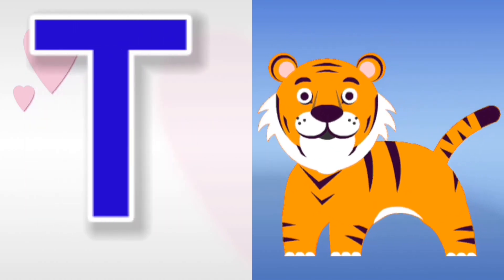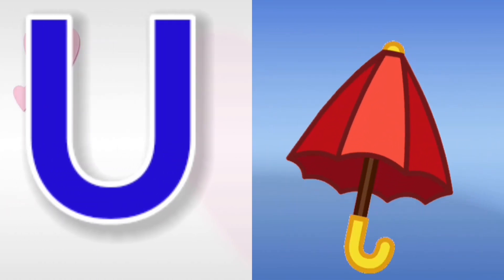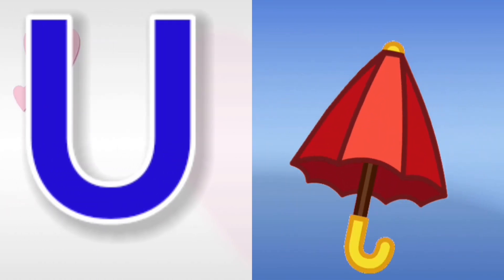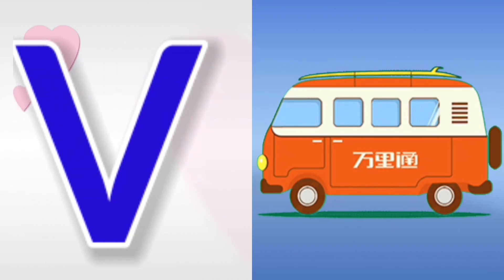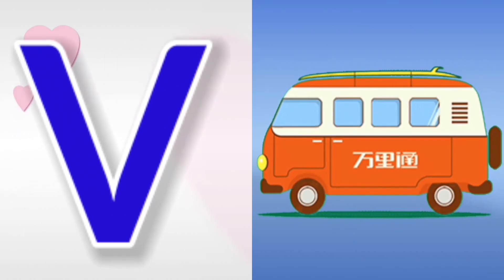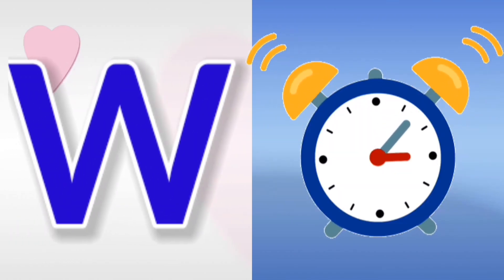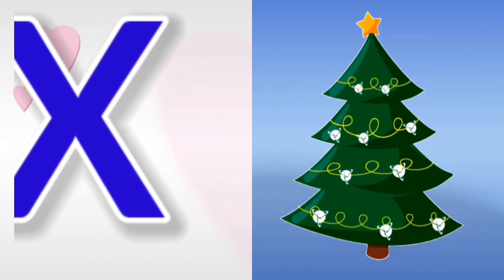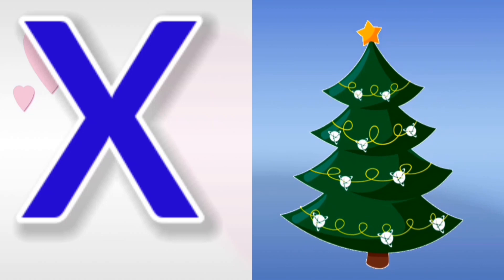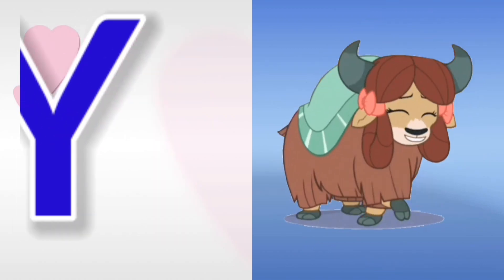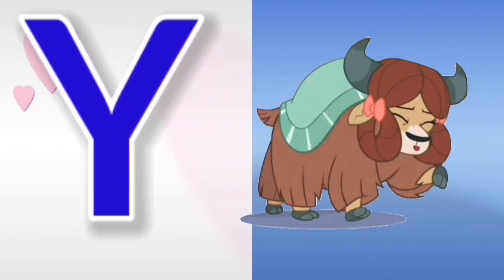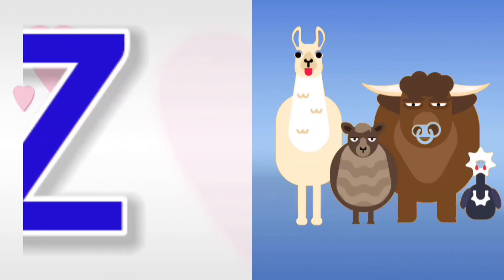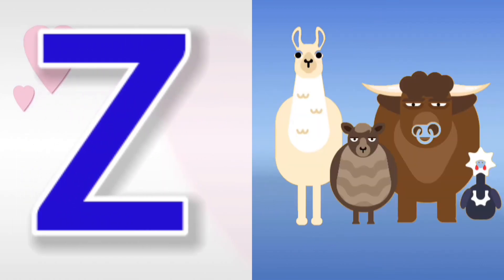S for sun, T for tiger, U for umbrella, V for when, W for watch, X for Xmas, Y for egg, Z for zoo.